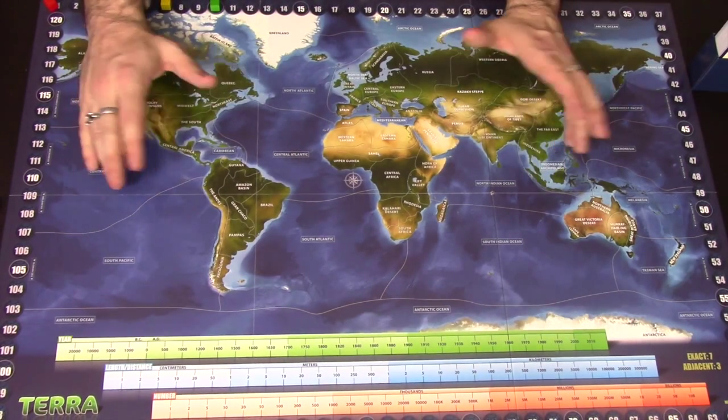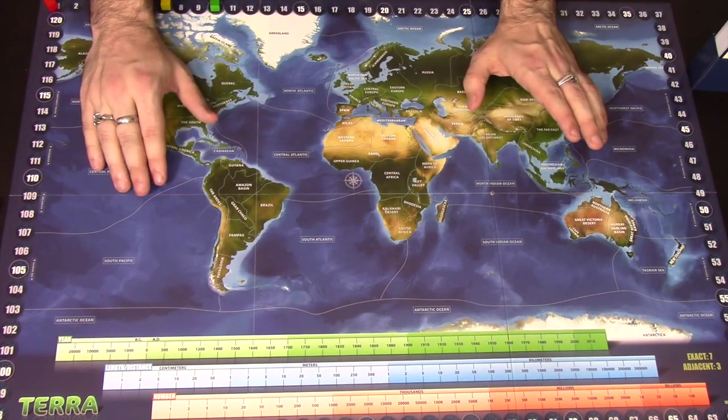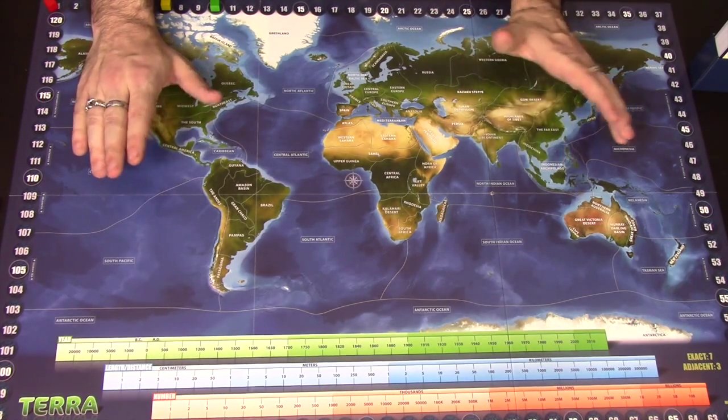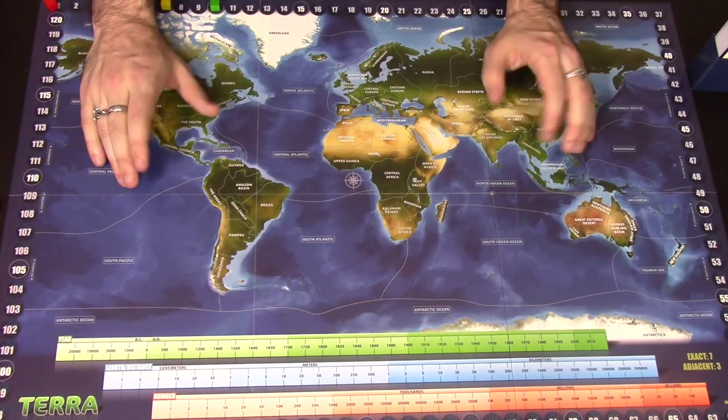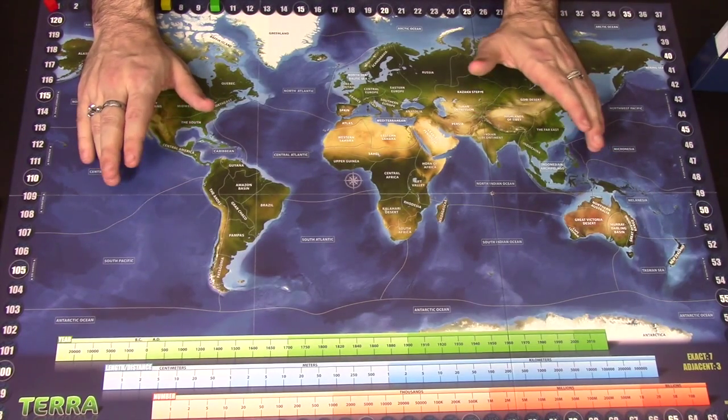You're going to do that for 6 rounds. You're going to have 6 goes at the question and you're going to change the start player each time. It is very advantageous going first, especially if it's something you know, because that's like a guaranteed 7 points.